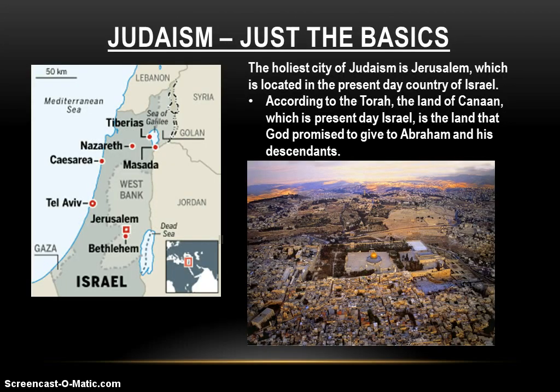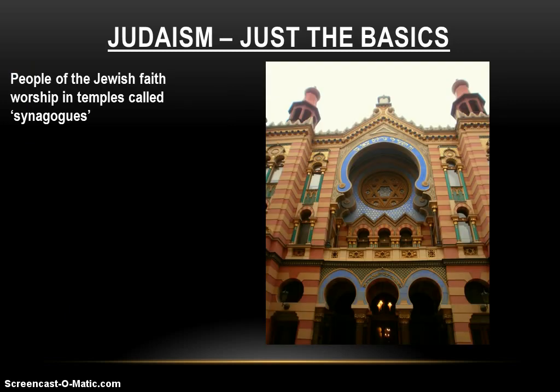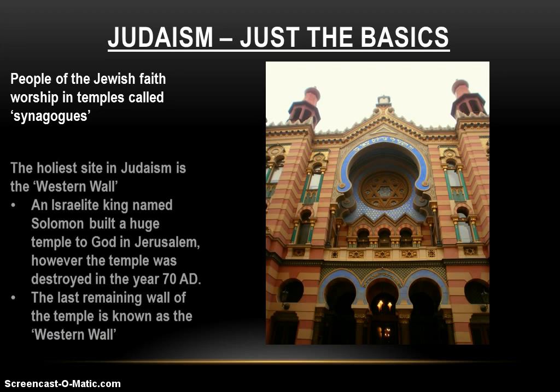Now we jump into just the basic facts about Judaism. The holiest city in Judaism is Jerusalem, the city believed to have been built by David as the capital of his kingdom. For the Jewish people, Jerusalem is the holiest city, located in the present-day country of Israel. According to the Torah, the land of Canaan — the present-day land of Israel — is the land that Jews believe God promised to give to Abraham and his descendants. People of the Jewish faith worship in temples called synagogues.